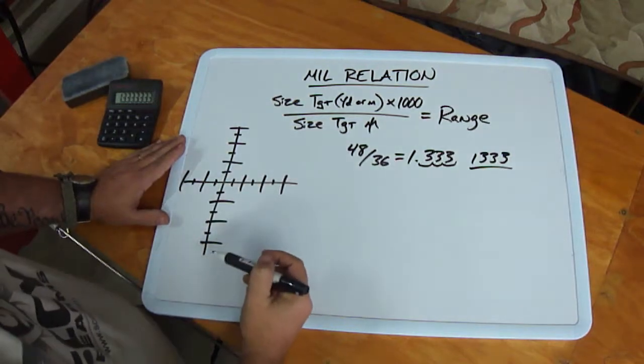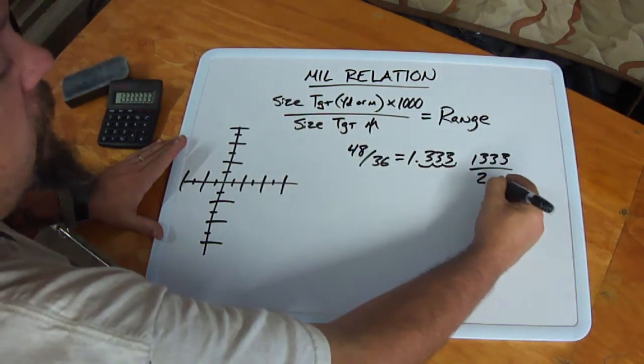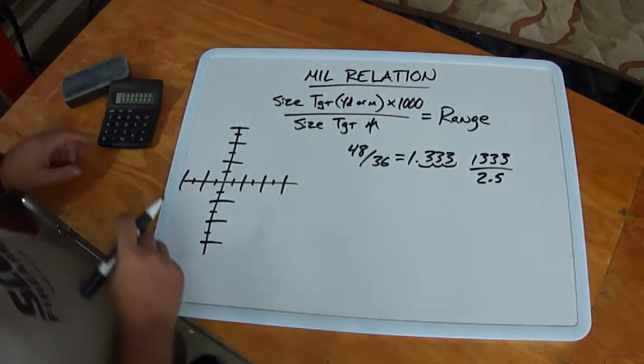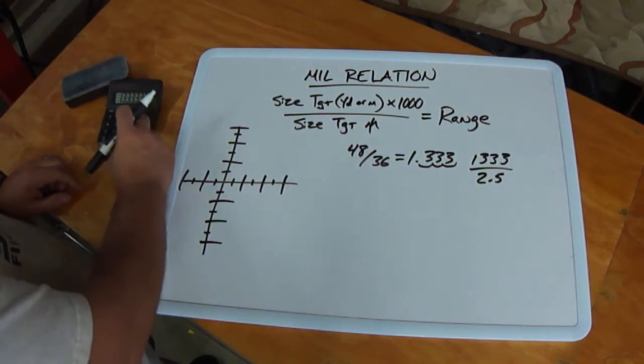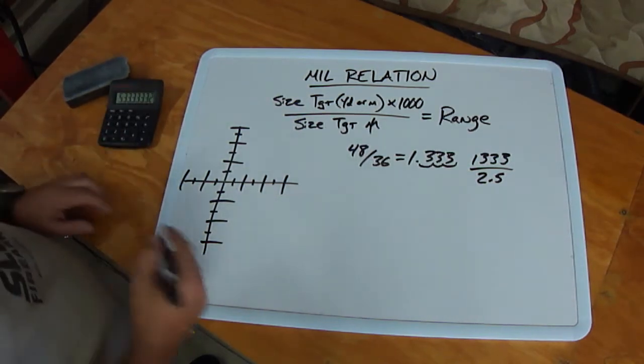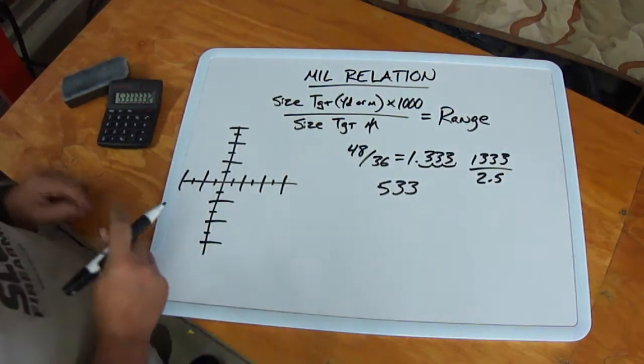We look at this 4 foot target in our reticle and we say it's 2.5 mils tall. Okay, 2.5, 13.33 divided by 2.5 equals 533 yards. It's as simple as that.